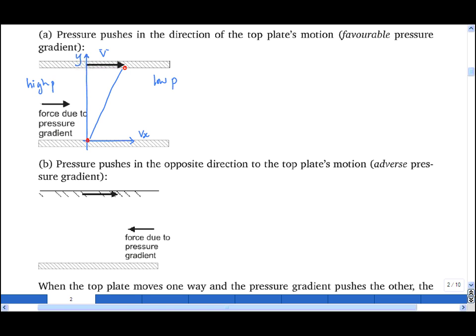However, because we have a high pressure on the left-hand side and a low pressure on the right-hand side, the velocity profile must bulge in a parabolic manner like this.